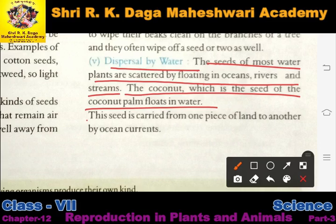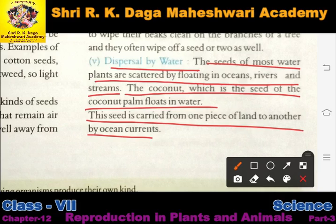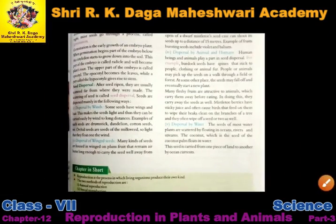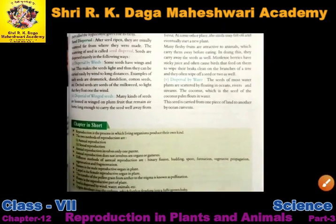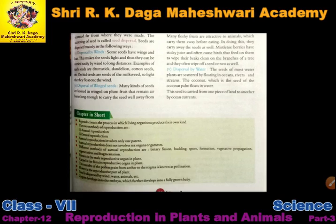Coconut jo ki seed hota hai coconut palm ka — woh paani mein tair sakta hai. This seed is carried from one piece of land to another by ocean currents. Is tarike se humne dekha ki jo seeds hain woh alag alag tarikon se ek jagah se dusri jagah ja sakte hain — unka dispersal hota hai.